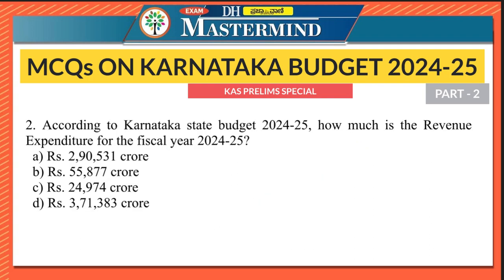The second question: According to Karnataka State Budget 2024-25, how much is the revenue expenditure for the fiscal year 2024-2025? The right option is option A — rupees 2,90,531 crore.